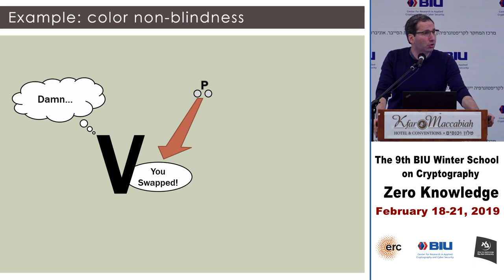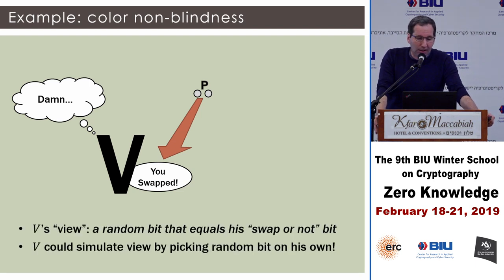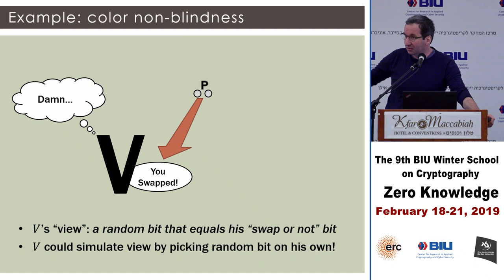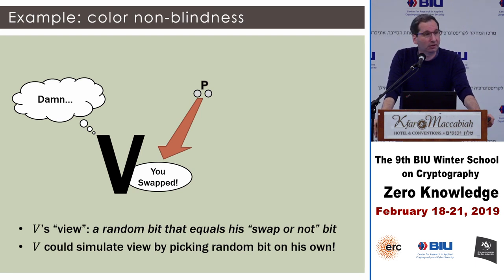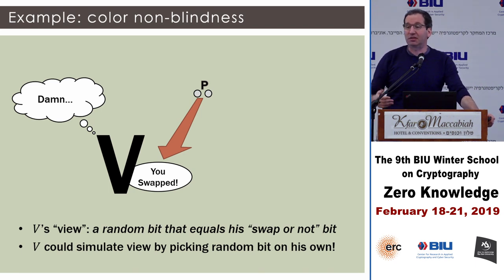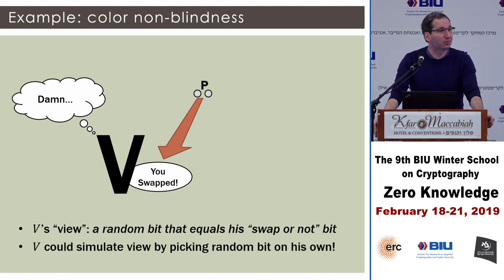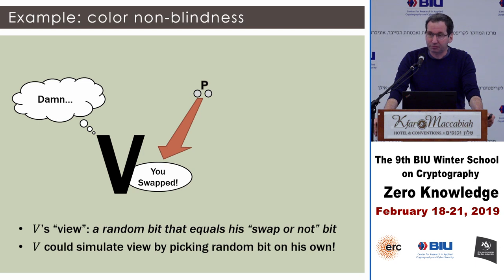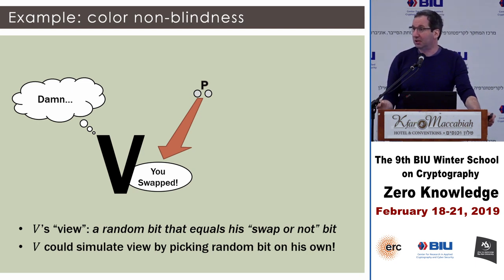We repeat this protocol many times until the verifier's confidence has increased overwhelmingly close to one. After repeating say 100 times, the verifier is really convinced that the prover can distinguish between the balls because he never failed. On the other hand, what did the verifier learn beyond that? His view is just the interaction: he flips a bit, sends it to the prover, and the prover always guesses correctly. This is something the verifier might as well have done without the prover — just flip a bit, tell yourself the bit, you're done. That's a classical example of zero knowledge.